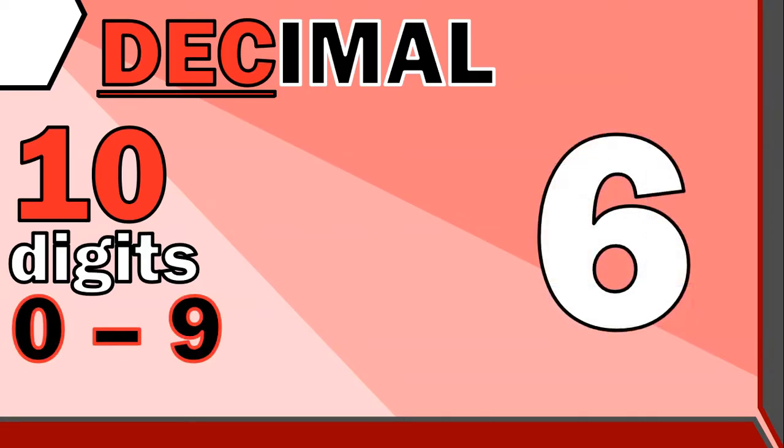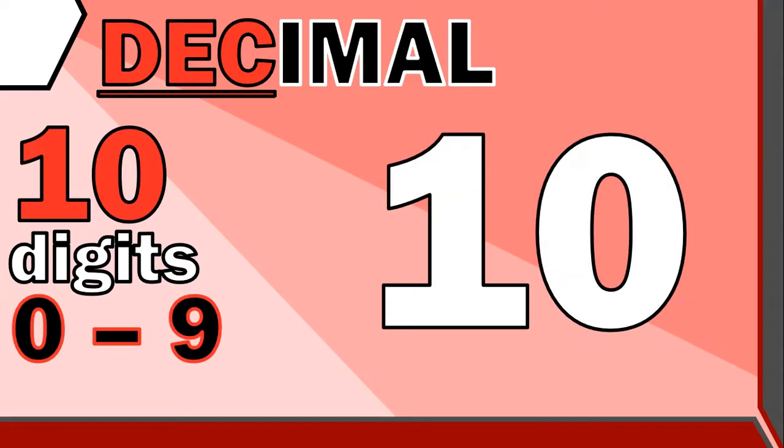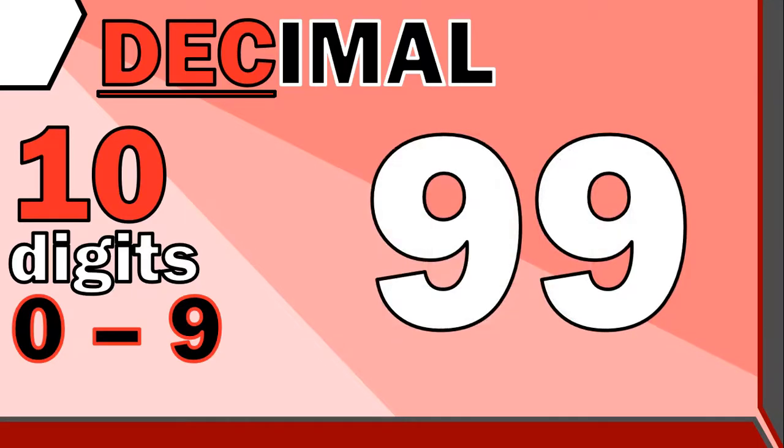In the decimal, or base-10, system we use 10 different digits to represent a number: from 0 to 9. So we have a 1, or a 6, or a 9, but the moment we go above 9 we need to use a new column — the tens column — and reset the other columns back to the lowest possible digit. We keep going up until 99, where we have to go to the hundreds column, then the thousands, and the ten thousands.